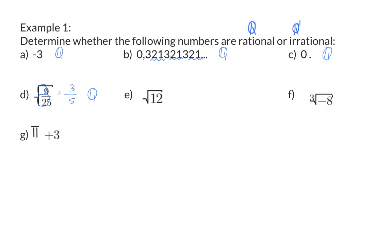In question E, we have the square root of a value that is not a perfect square number. And therefore, this will be an irrational number.